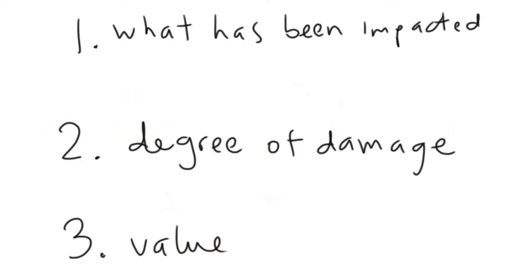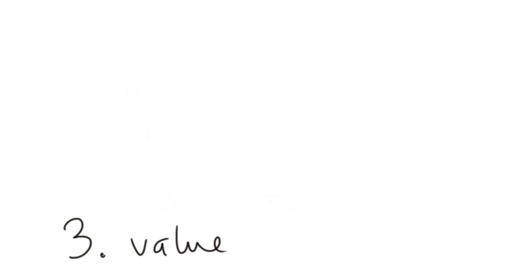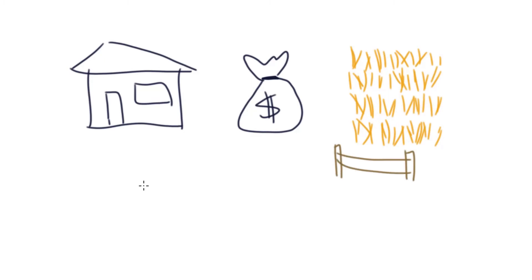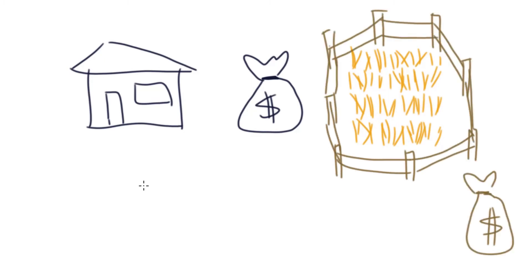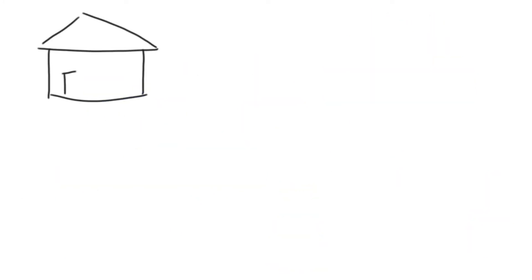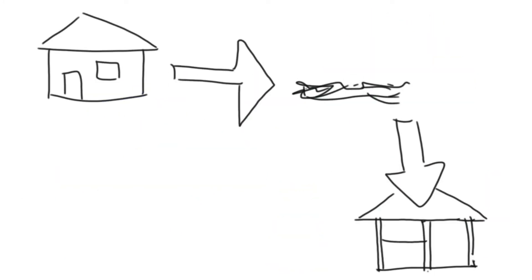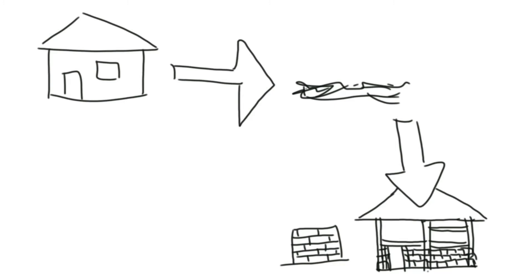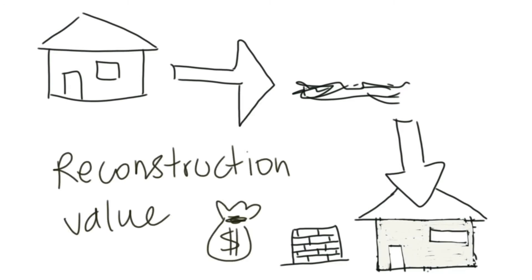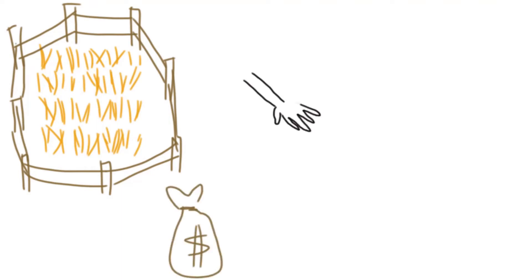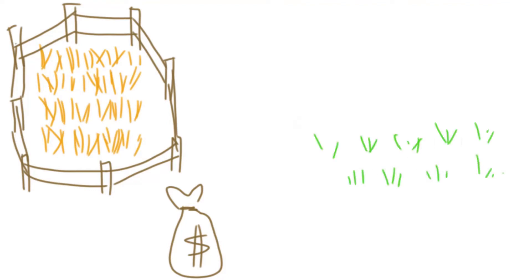Third, we need to know the value of the assets damaged or destroyed. The way we estimate the value of an asset depends on the type of asset we are dealing with. To estimate direct tangible impacts, we tend to use the reconstruction value of the asset destroyed — in other words, we measure what it would cost to reinstate the asset to its former state before it was damaged or destroyed by the natural hazard event. In other cases, like in the case of crops, we use the market value of the commodity to estimate losses and, where possible, the cost of getting the crop back to where it was before it was damaged.